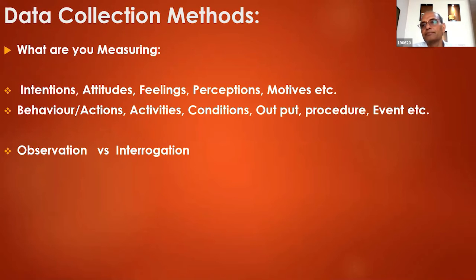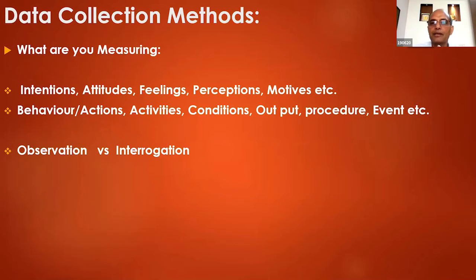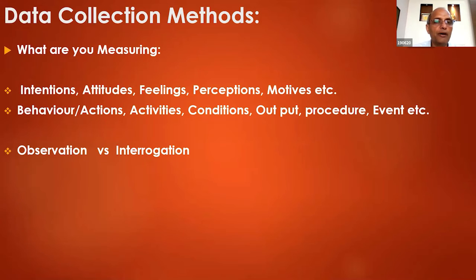Data collection methods: what kind of methods will you use? That depends upon what you are measuring. Two types of things you measure: intentions, attitudes, feelings, perceptions, motives, etc. — or behavior: actions, activities, conditions in which people work, output, procedures, and events. If you are measuring intentions and attitudes, please use an interrogation method — develop an instrument, normally a questionnaire. If you are measuring behavior and actions, use observation.